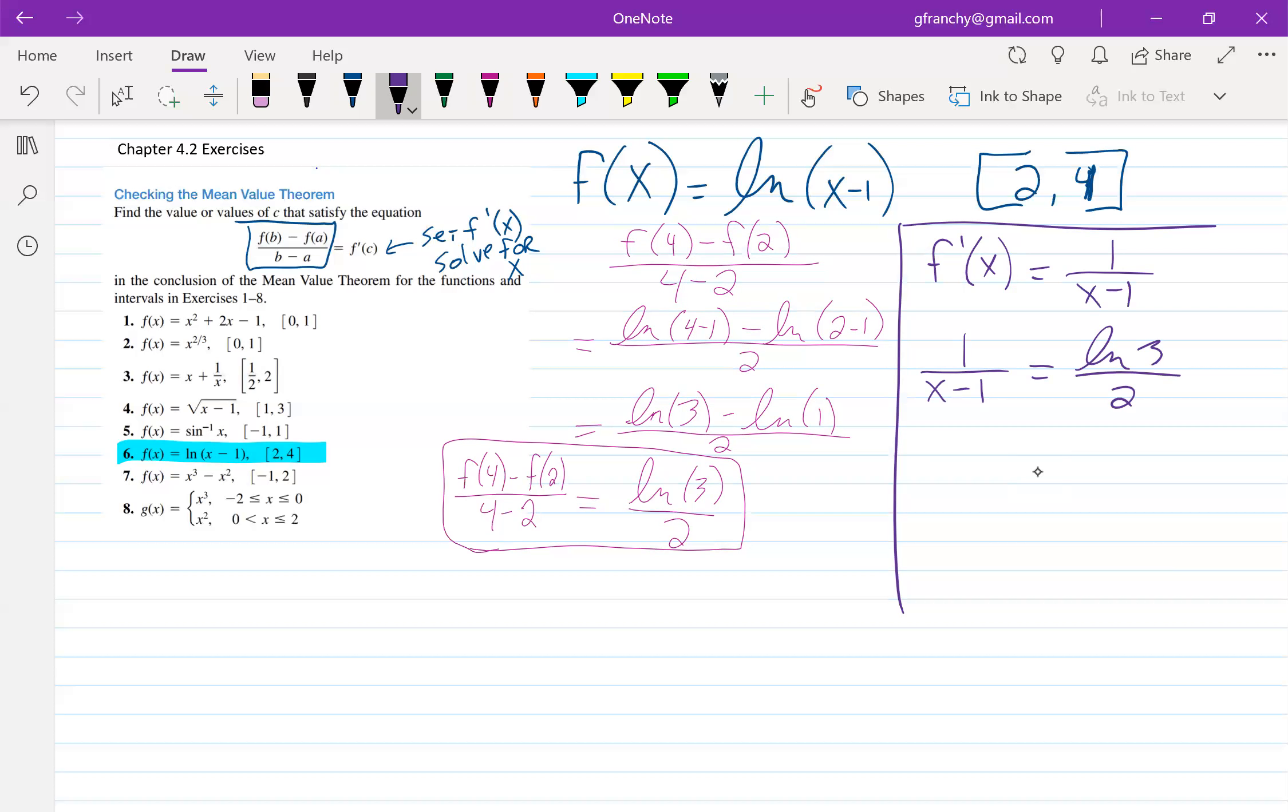And what we can do now is we actually have a couple choices. We can either clear denominators or because we have fraction equals fraction, we can just take the reciprocal of each side and set those equal to each other. And then that allows us to just add one to each side. And that gives us our value here. And what we were solving for is c. So c is equal to one plus two over the natural log of three.